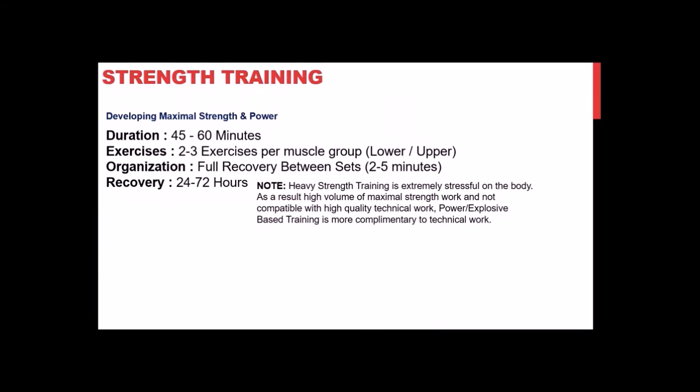General guidelines for strength and power training: sessions of 45 to 60 minutes, especially if done after practice when athletes are already accumulating fatigue. Include two to three exercises per muscle group — lower body patterns like squatting, deadlifting, and split squatting, and upper body patterns like pushing and pulling. Generally four to six exercises total, with sets and reps varying depending on whether you're targeting muscle size, power, or strength.